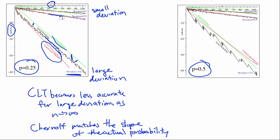But the reason why we only care about the large deviation case is because, as you can see, the central limit theorem does much better for smaller deviations.